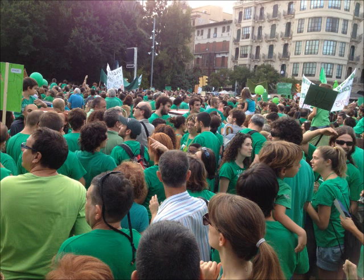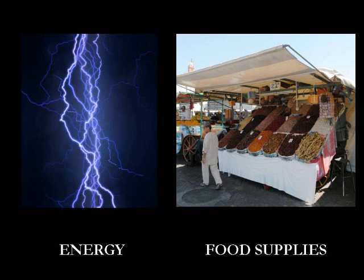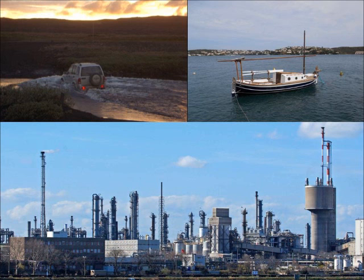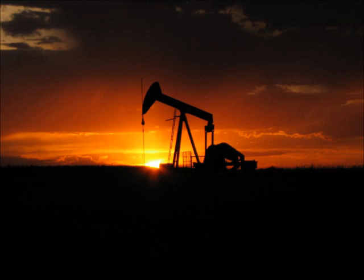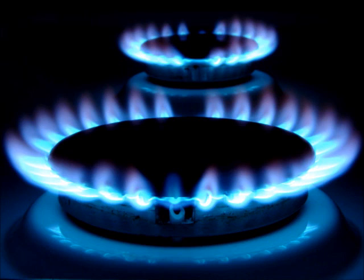All of us, as human beings, use natural resources to support our life. And we have two basic needs: energy and food supplies. Energy is required for vehicles or industries to work, like the ones we have in the picture. And our main source are fossil fuels, which are coal, petroleum and natural gas.